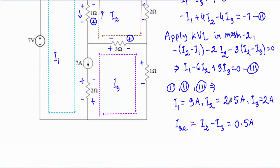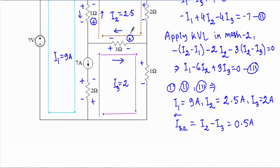Solving equations 1, 2, and 3 simultaneously gives I1 = 9 amperes, I2 = 2.5 amperes, and I3 = 2 amperes. The current through the 3 ohm resistor is the difference between I2 and I3, since they flow in opposite directions through it. Therefore, the current through the 3 ohm resistor is 2.5 - 2 = 0.5 amperes.